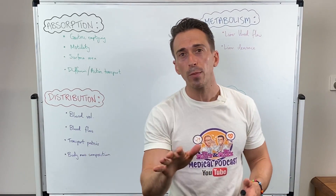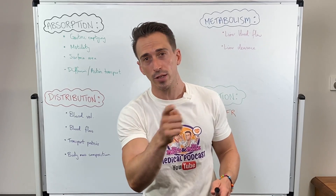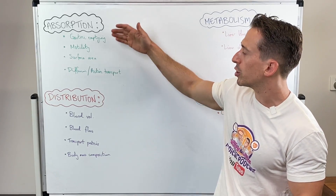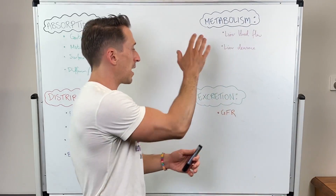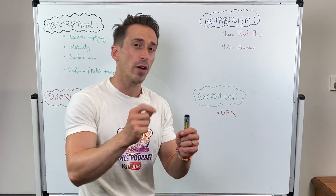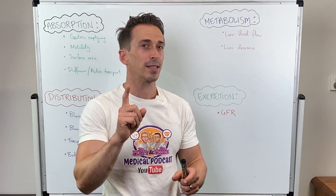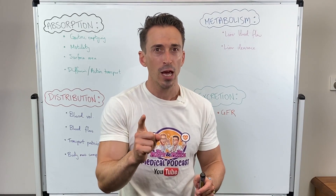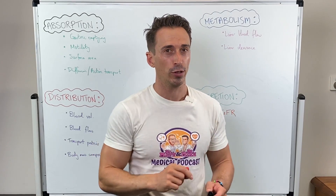When we look at pharmacokinetics, there are four phases you need to be aware of: absorption, distribution, metabolism, and excretion. There are various factors that can alter these particular phases, and these are the factors we need to take into consideration because they're slightly different for the older person.